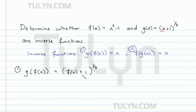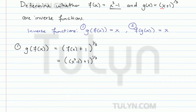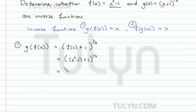We have (f(x) + 1)^(1/3), and we know exactly what f(x) is, so we replace it in the parenthesis. f(x) is x³ - 1, so we get (x³ - 1 + 1)^(1/3). Simplifying, we can remove the inner parentheses, giving us (x³ - 1 + 1)^(1/3).